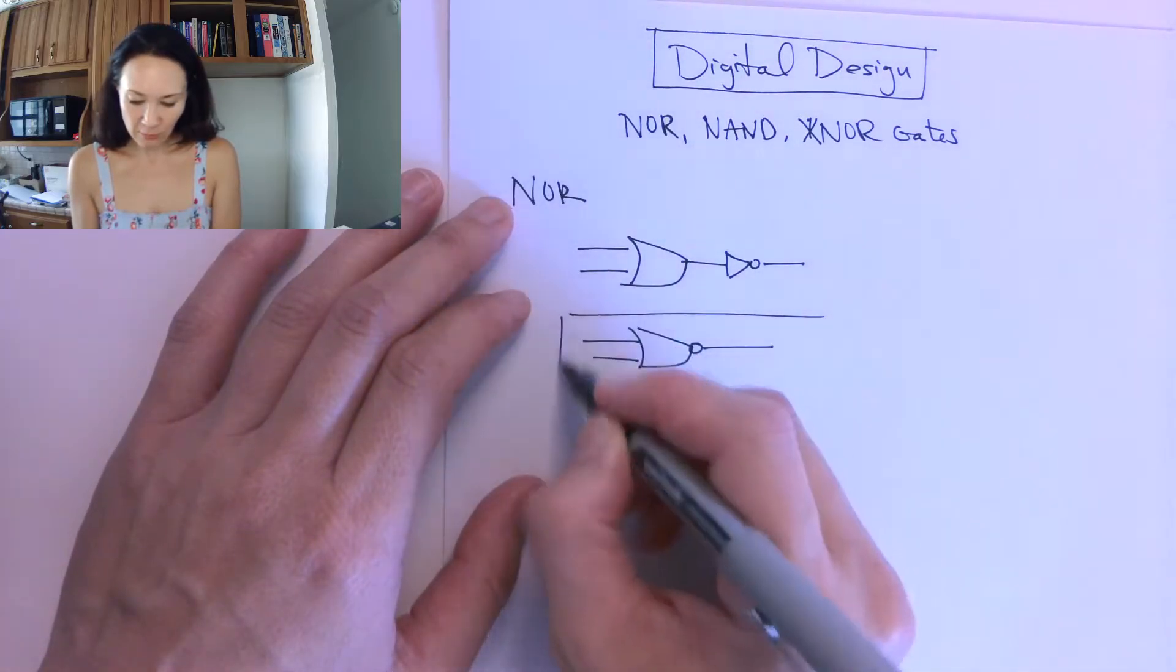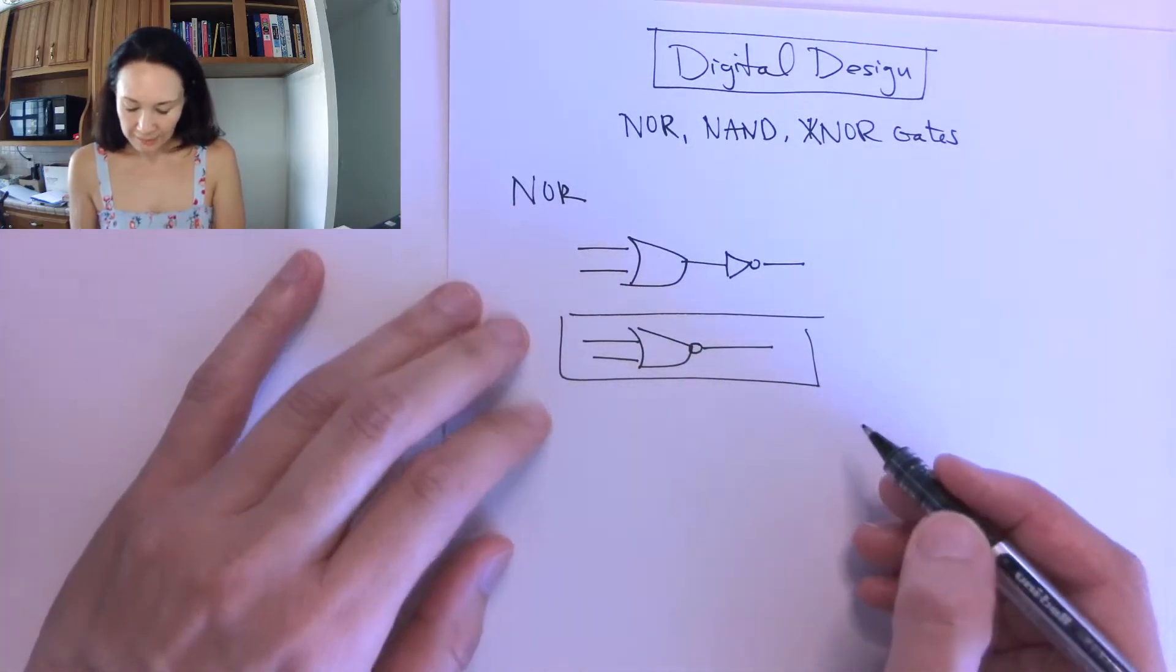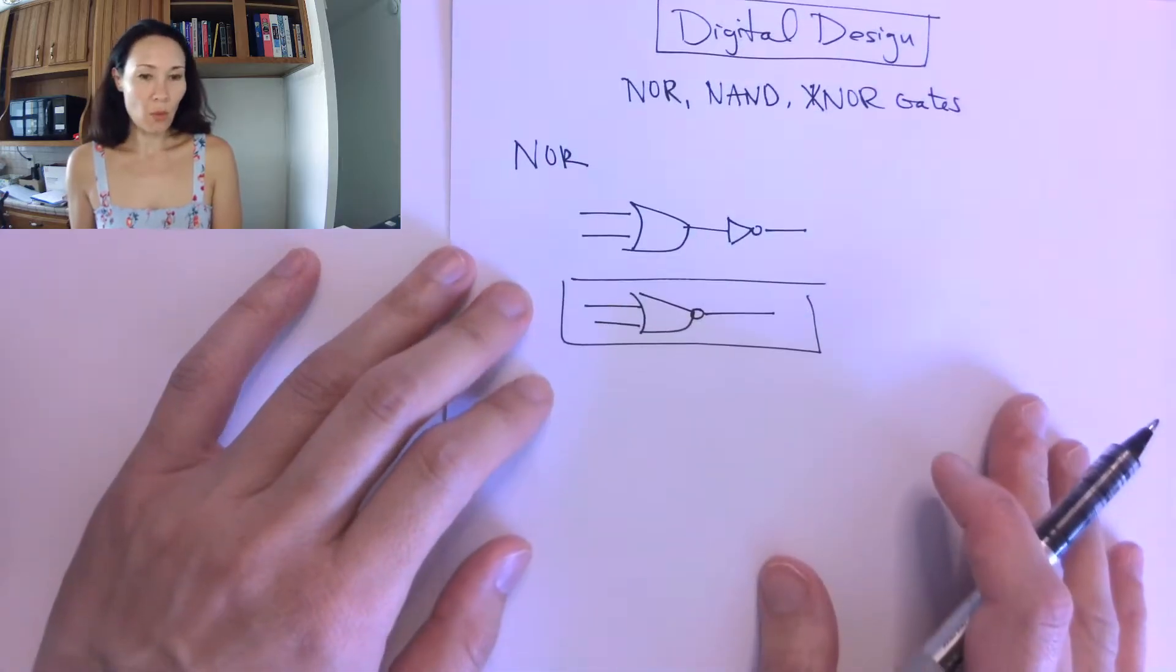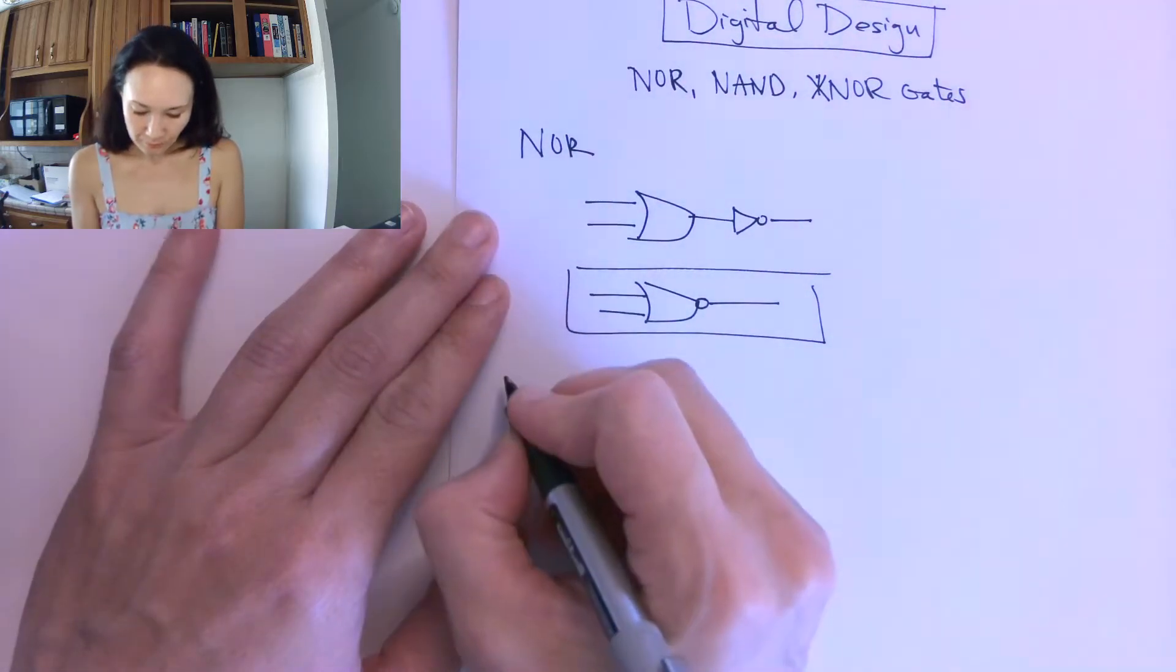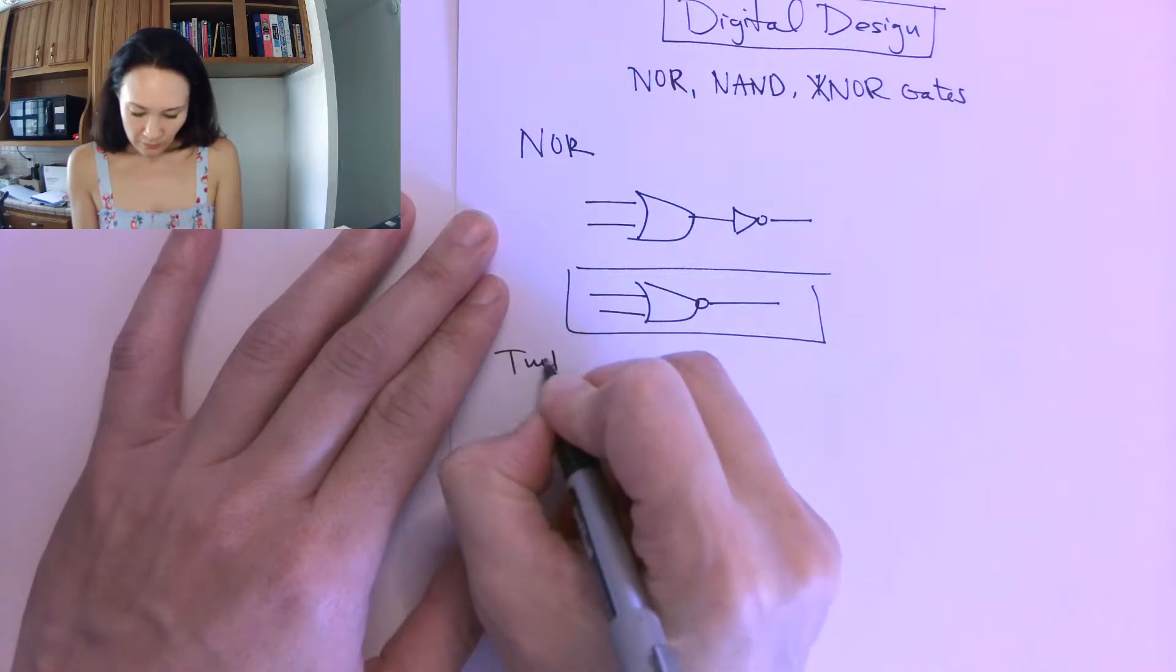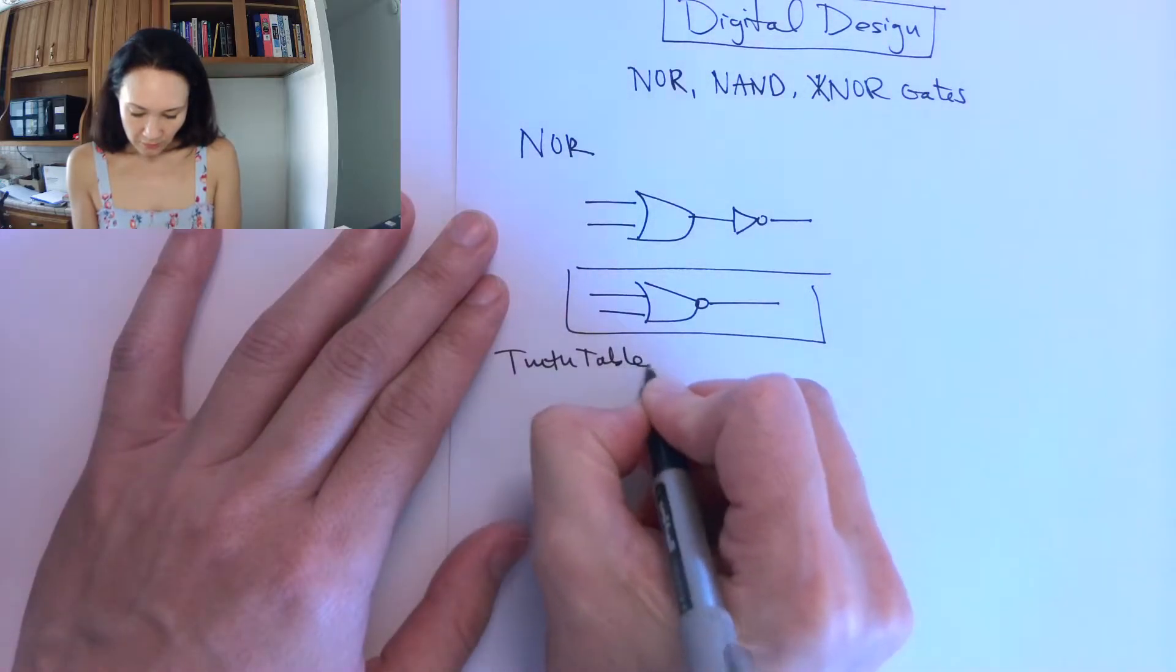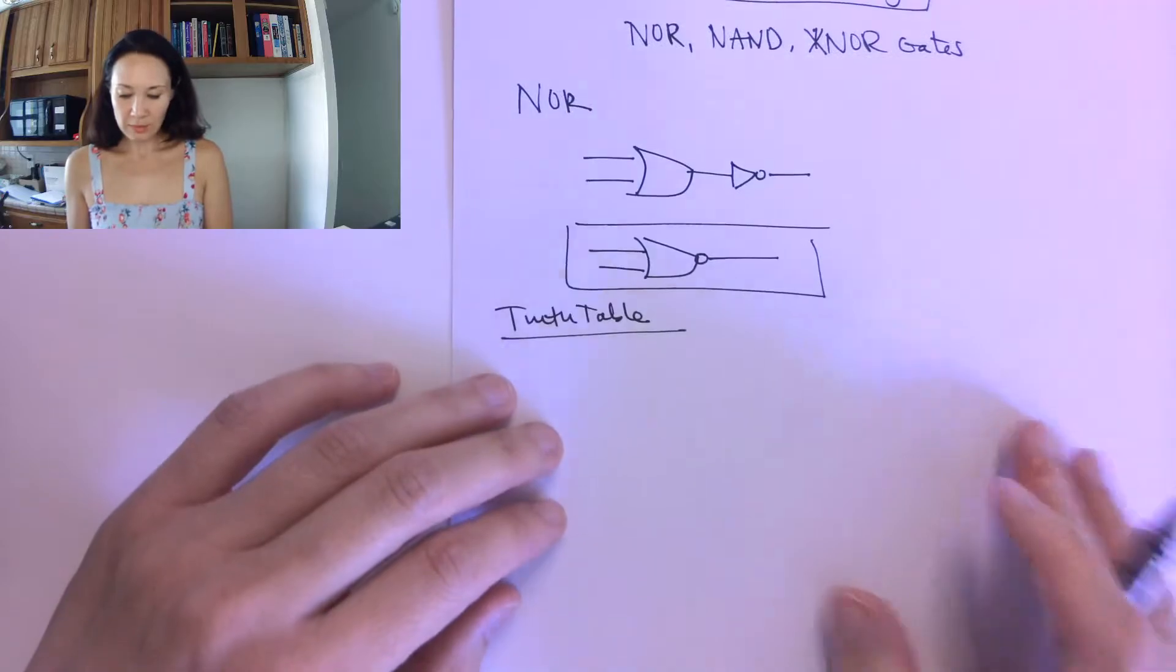This is the schematic symbol for a NOR gate. It can take two or more inputs, and the truth table for the NOR is a good way to explain the functionality.